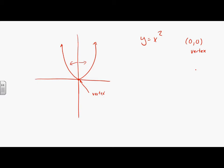We have a standard equation: a times (x minus h) squared plus k. This is the standard equation of a parabola, and the vertex is (h, k). h is the number inside the parentheses; k is the number on the outside. If you don't have parentheses, h is 0. If you're not adding a number by itself, k is 0. That's why x squared has a vertex at (0, 0) — there's no h, no k.